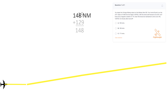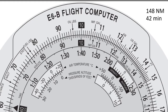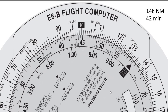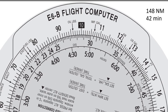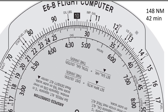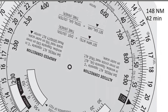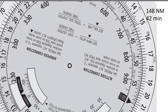The problem says we need to make this distance in 42 minutes, so here comes the E6B. We align 42 minutes on the inner scale with 148 miles on the outer scale. Then we look at 60 on the inner scale — the black box marked 'rate' — which lines up with how many miles we travel in 60 minutes, our speed in nautical miles per hour. It lines up with 211.